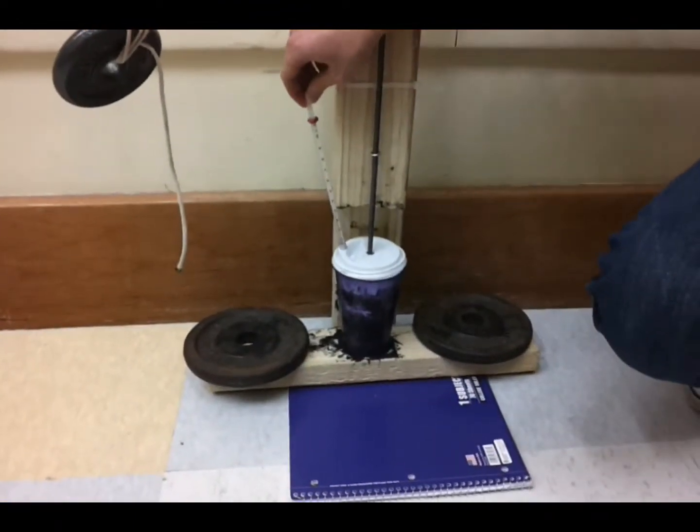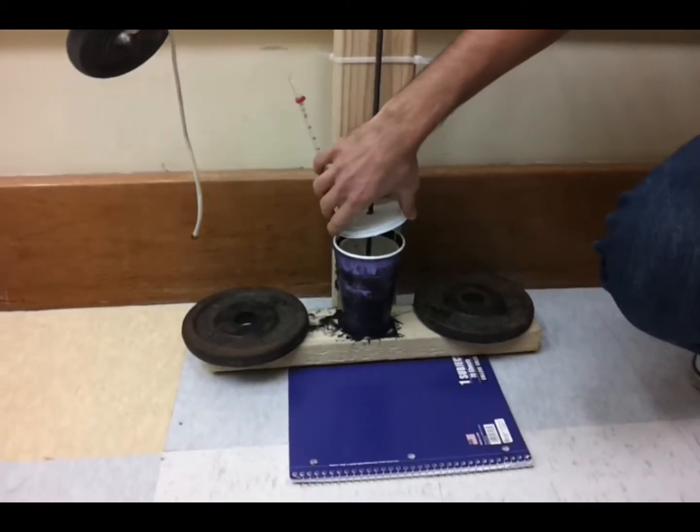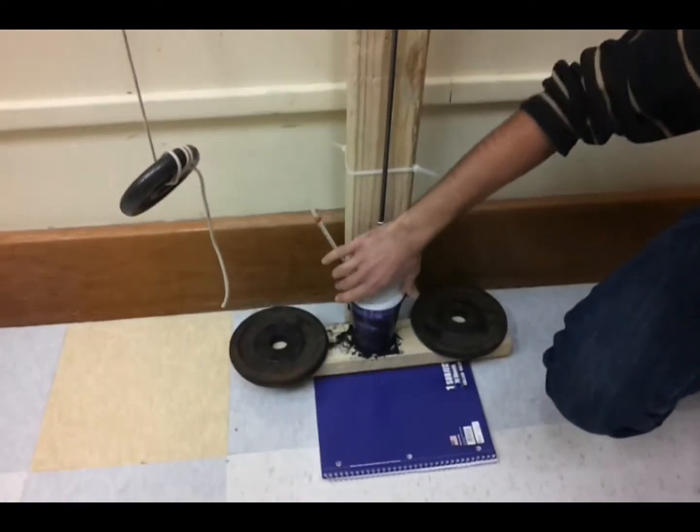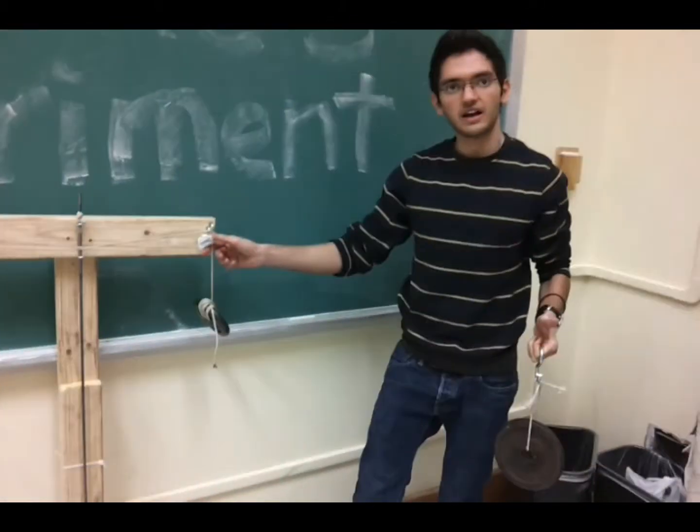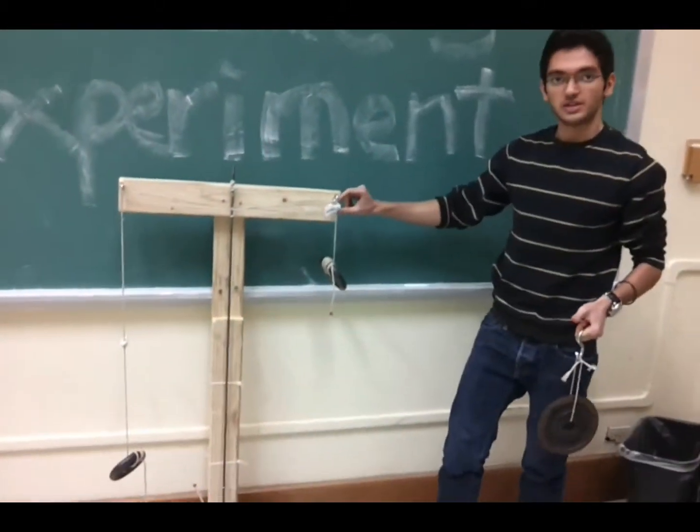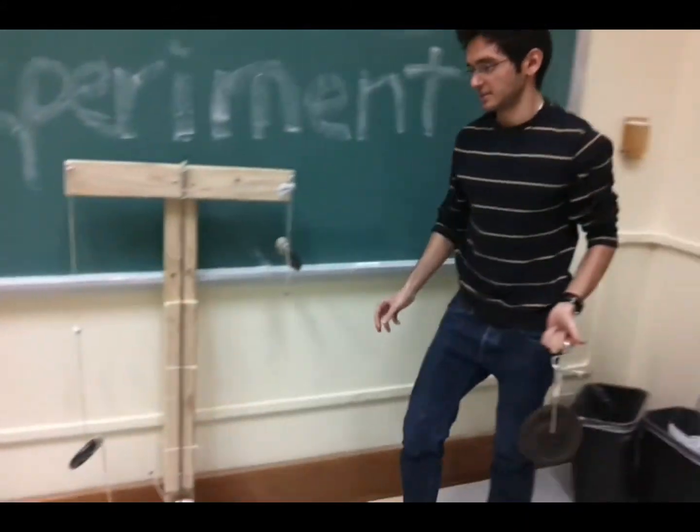Right now the temperature is about 25 degrees Celsius. It is filled with vegetable oil. Essentially each of these weights will be falling about 15.5 inches, and these stoppers right here ensure that each weight falls that same exact height.